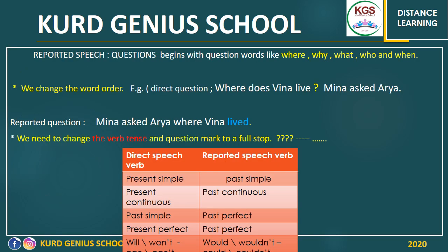In reported speech question form, it means we are beginning with the question words like where, why, what, who, when. We should have these words in the question form, and we have to change them. The first note we have to know is that we change the word order — it means we change the sentence patterns, the way of the sentence. For example...